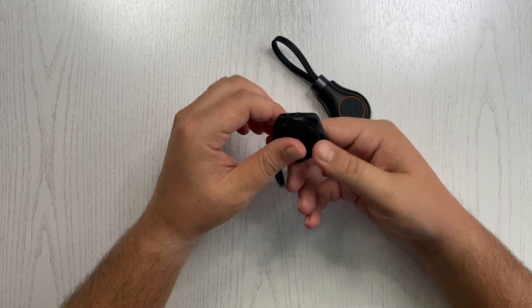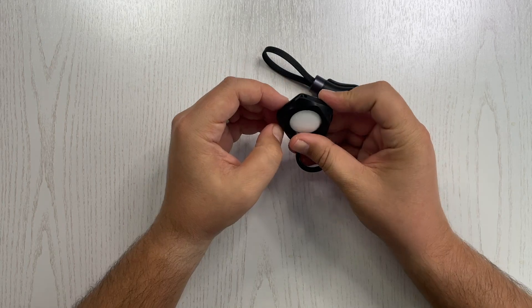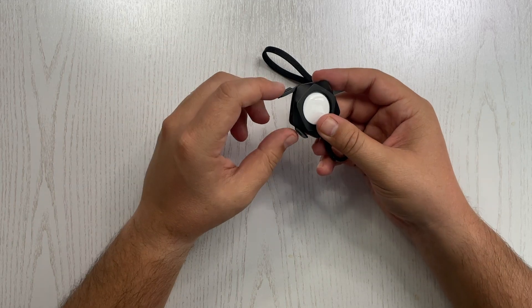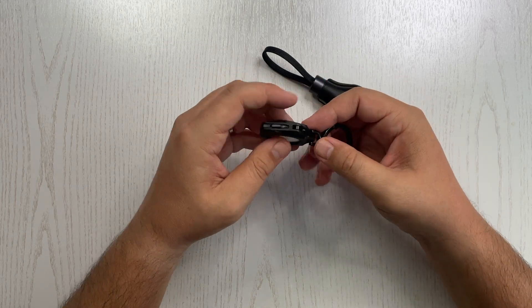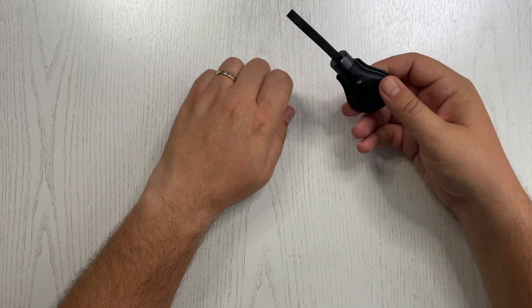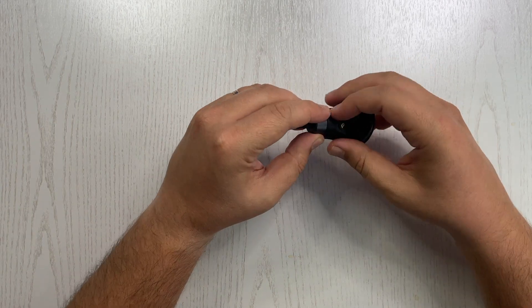I have over here the previous accessory from Pitaka. This is the multi-tool. And if you remember, it has a couple of accessories like a screwdriver or a small knife. So let's remove the AirTag from this one. Let's put it inside the new case.